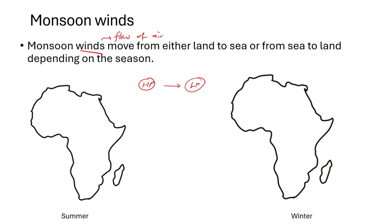Monsoon winds can flow either from the land to the sea or from the sea to the land. During summer, monsoon winds flow from the sea to the land. These arrows represent air or wind flowing into the land from the sea — the sea here being the oceans.